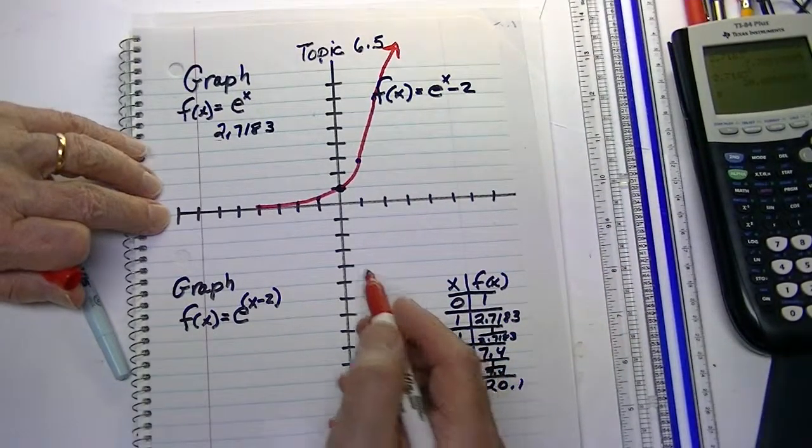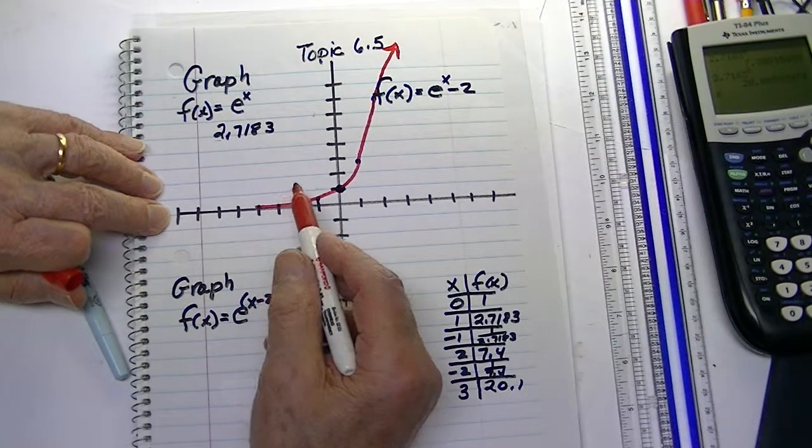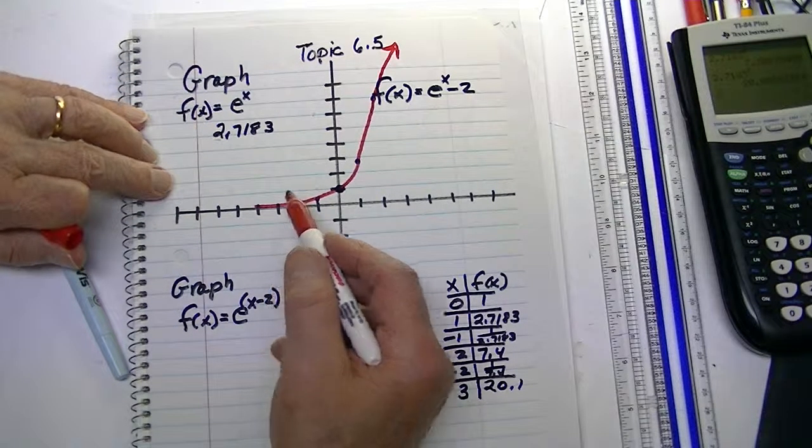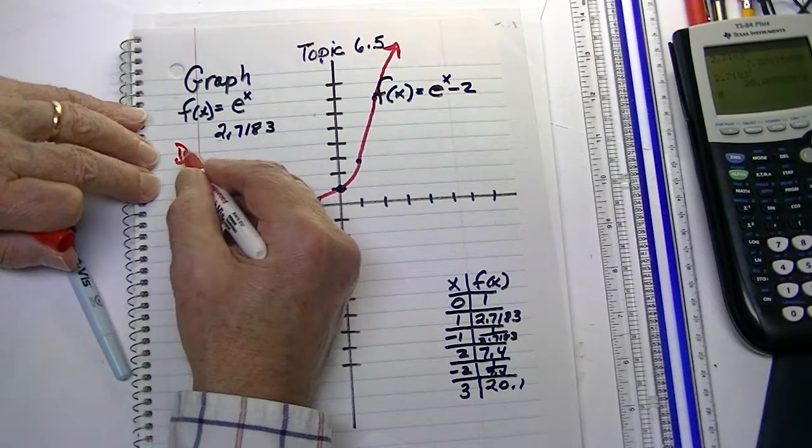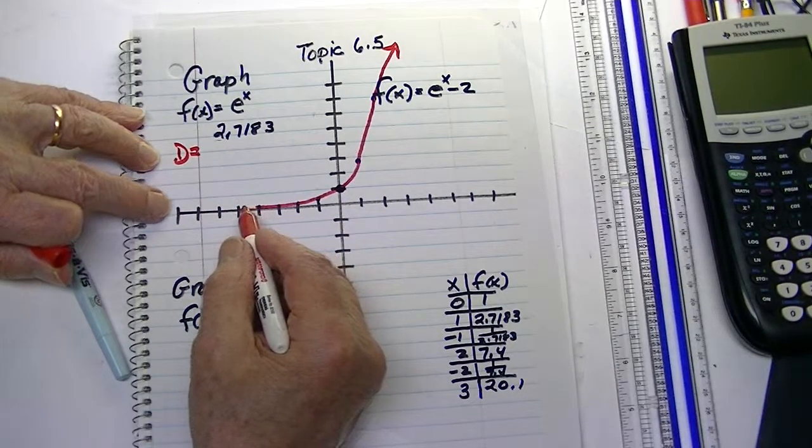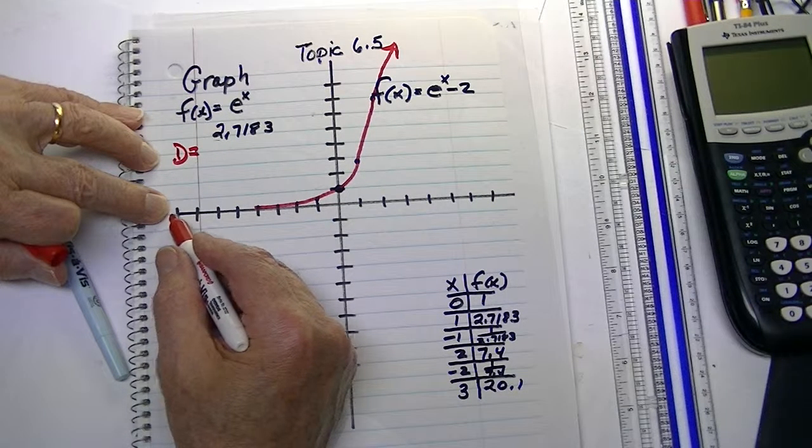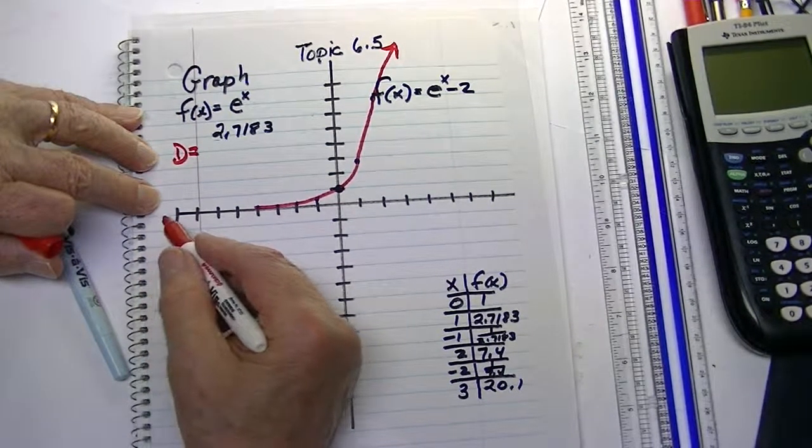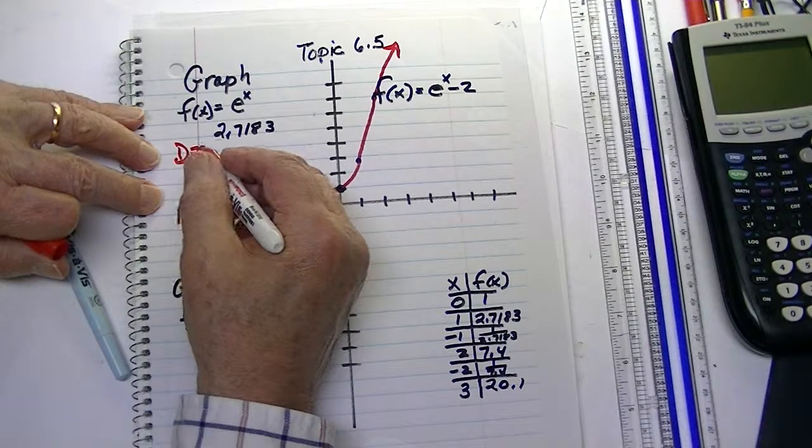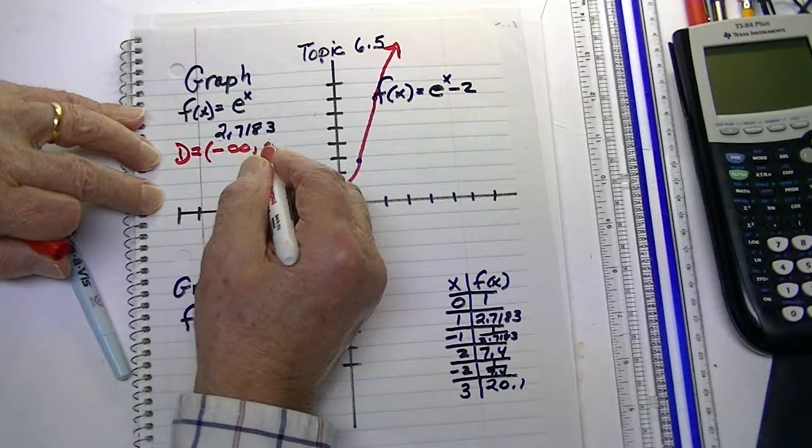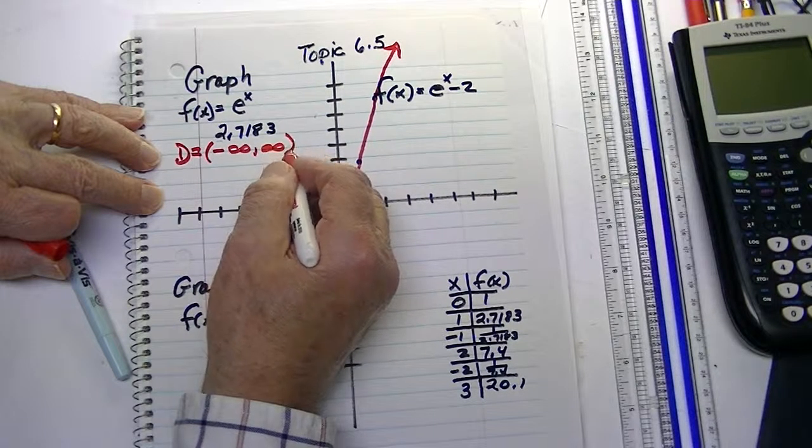Now, if we want to find our domain of this one, our domain of this one is, again, this goes ever and ever closer to 0, but never reaches 0, but goes to infinity off onto the left here. So, it's from negative infinity up to positive infinity.